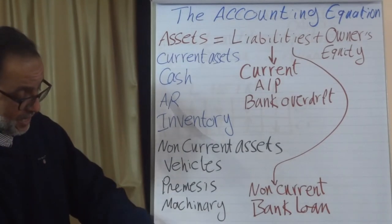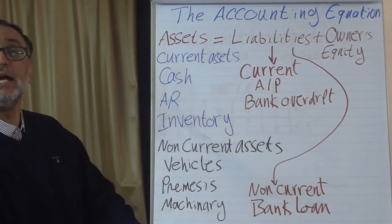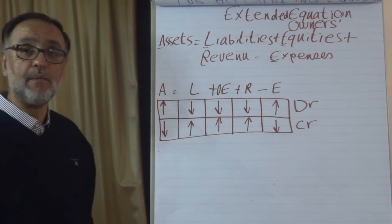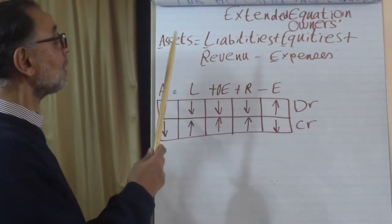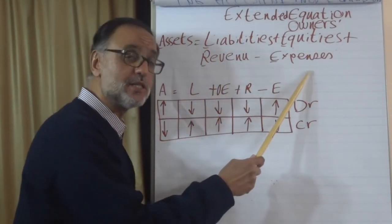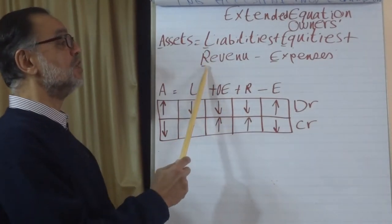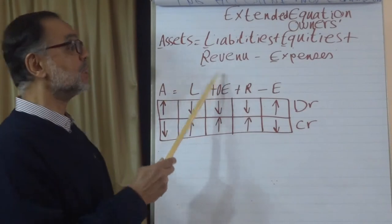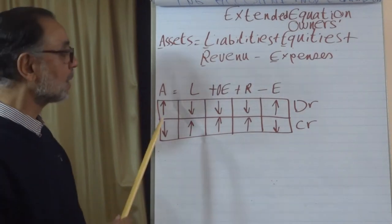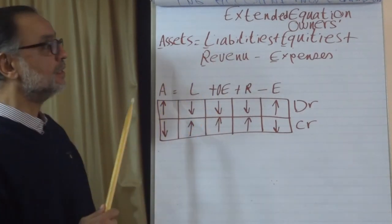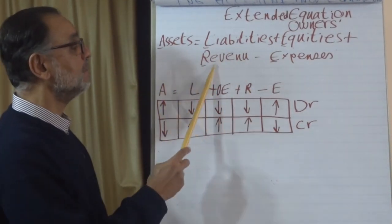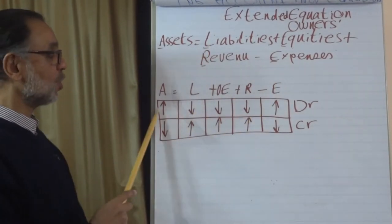This is the basic form of the accounting equation when the business starts. At the end of any accounting period, we use an extended accounting equation: Assets = Liabilities + Owner's Equity + Revenues − Expenses. We add revenues generated and expenses incurred during the period to adjust the value of assets, which tells us the new value of the business. Taking the first letter of each term: Assets (A), Liabilities (L), Owner's Equity (OE), Revenues (R), and Expenses (E). This leads us to the rules of debit and credit.